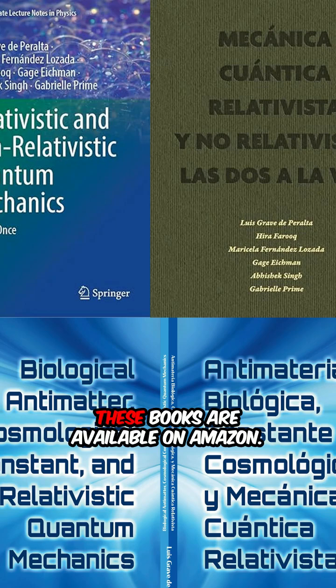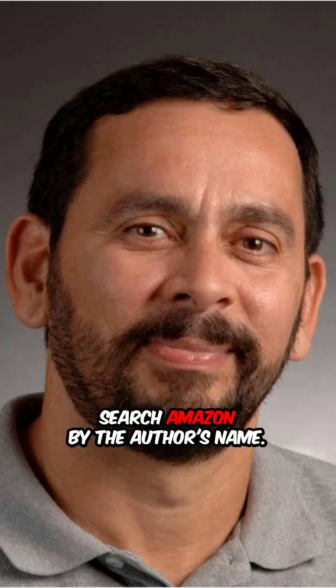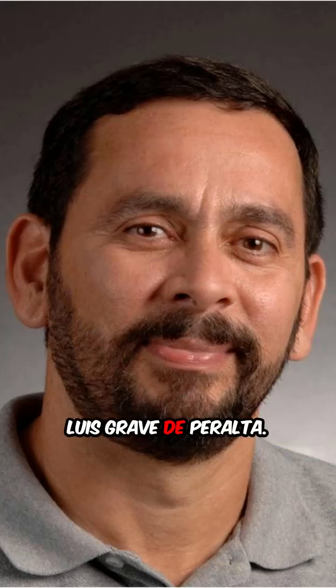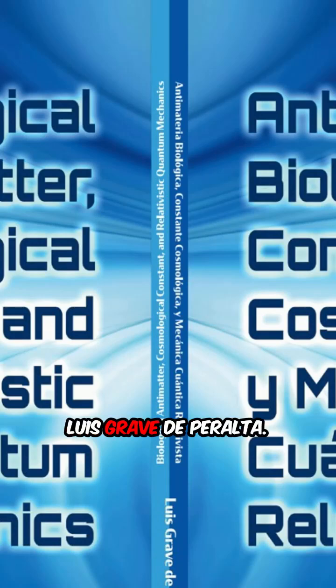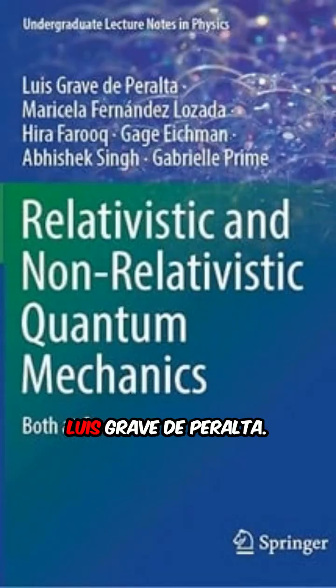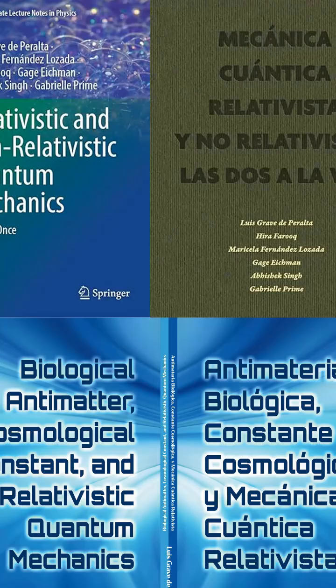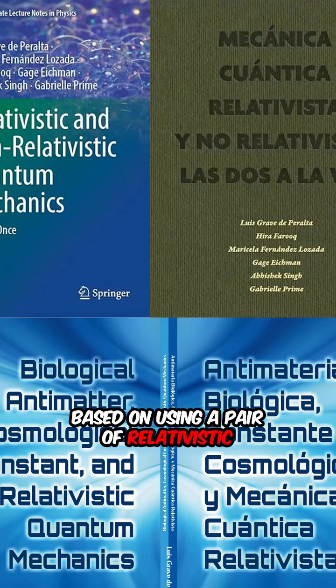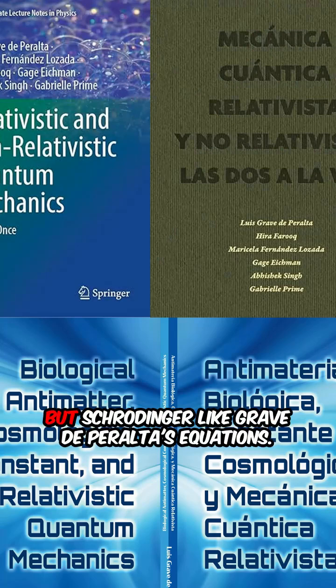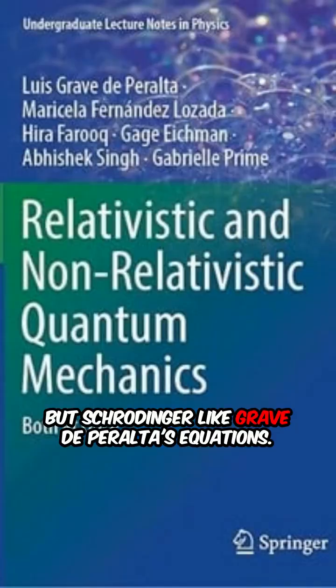These books are available on Amazon. Search Amazon by the author's name, Luis Grave de Peralta, based on using a pair of relativistic but Schrödinger-like Grave de Peralta's equations.